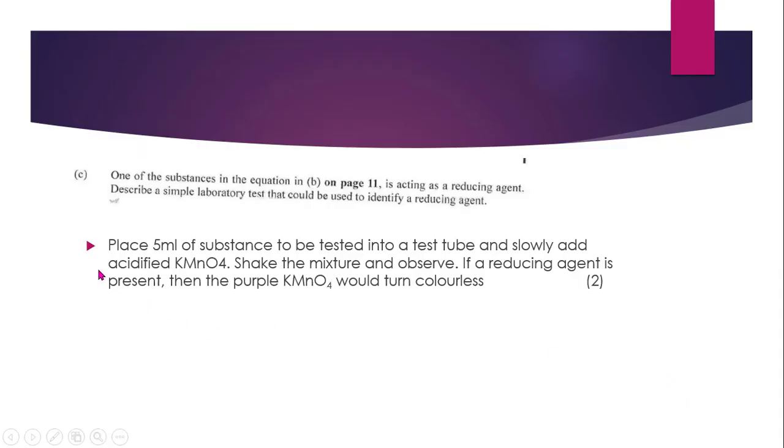This will be one way of doing it. You can place 5 ml of a substance to be tested into a test tube and slowly add acidified potassium permanganate. Shake the mixture and observe. If a reducing agent is present, then the purple potassium permanganate will turn colorless. This is the most important thing in the topic of redox. Potassium permanganate, color change, purple to colorless. You can also state that you can use acidified potassium dichromate instead of this and the color change will be orange to green. Either one is correct.